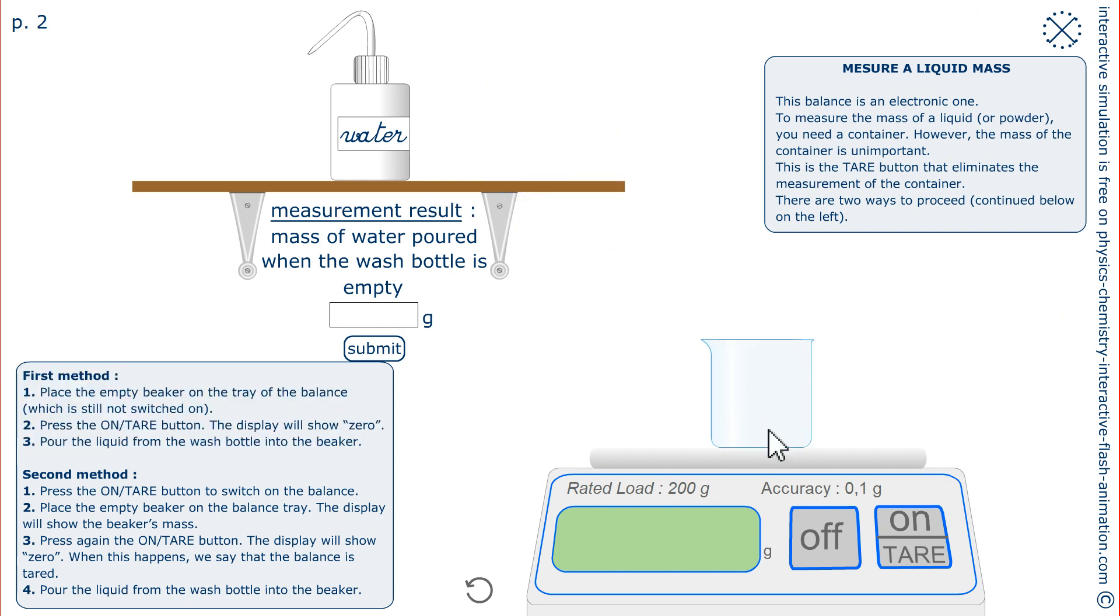First method: I put the container, a beaker, here empty, and I do not press on until after. The display shows zero, so that the screen from now on will only give me the mass of the liquid, water for example. I am asked here the mass of water poured when the squeeze bottle is empty.